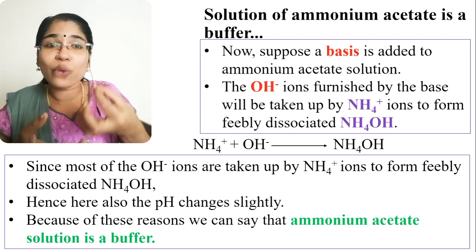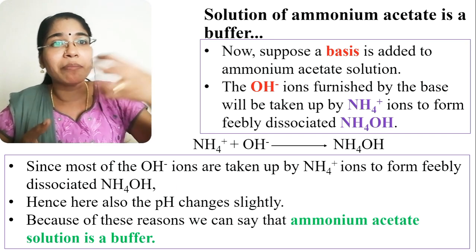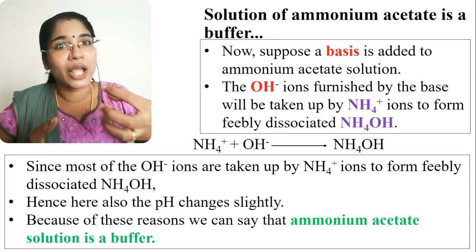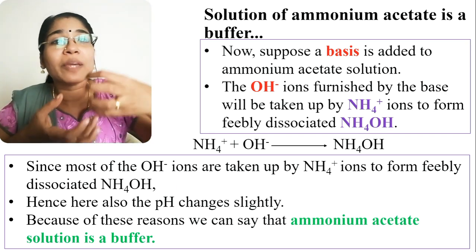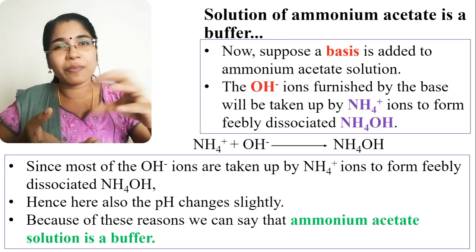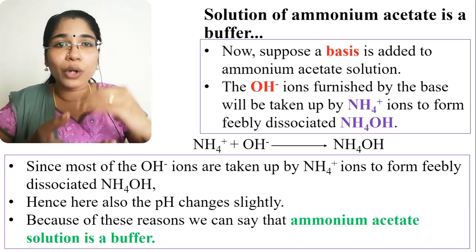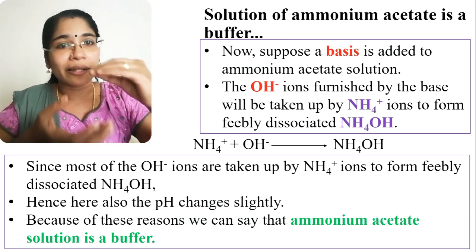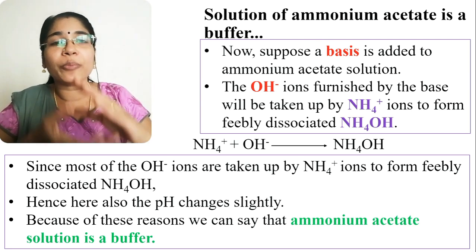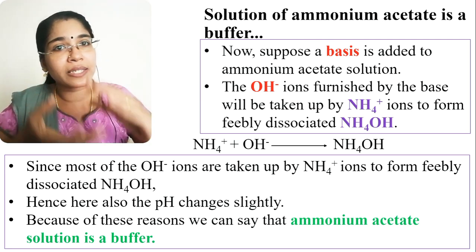Since most of the OH⁻ ions are taken up by the NH4⁺ ions to form NH4OH, which is feebly dissociated, the OH⁻ ion concentration changes very little. Therefore, the pH also changes only slightly here as well.